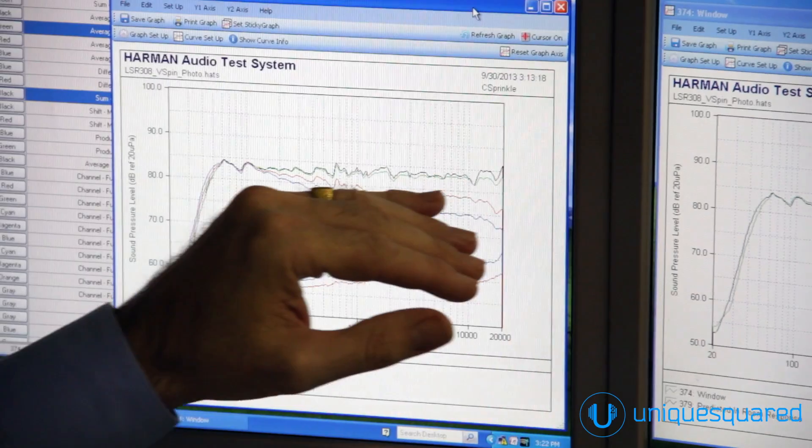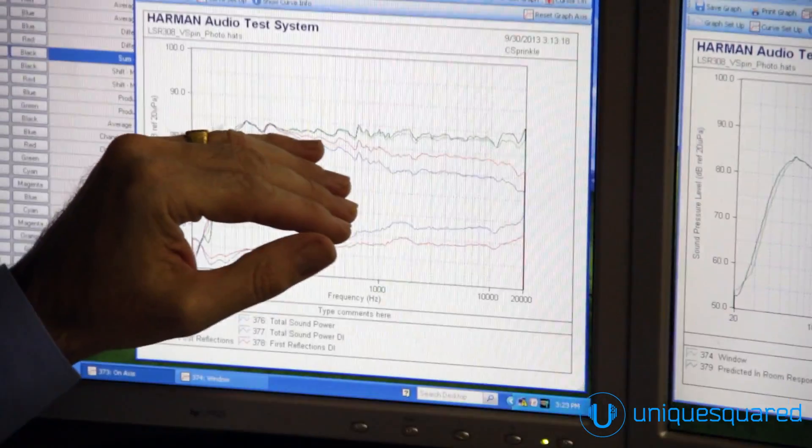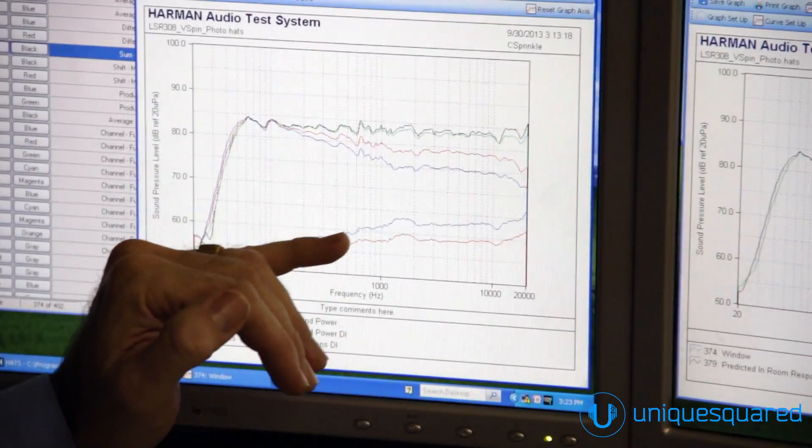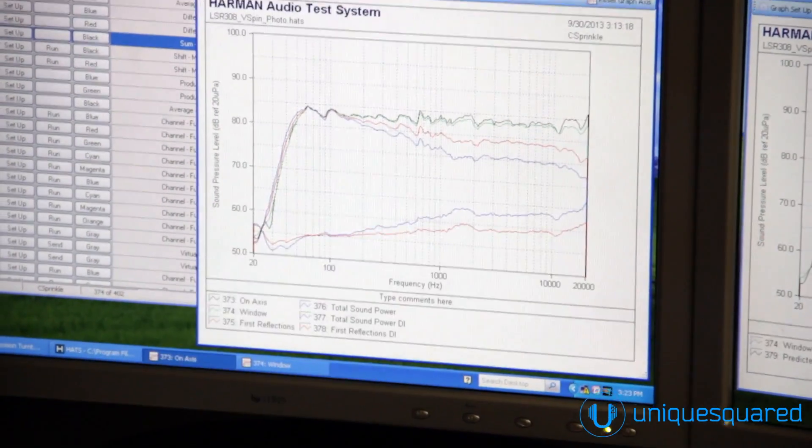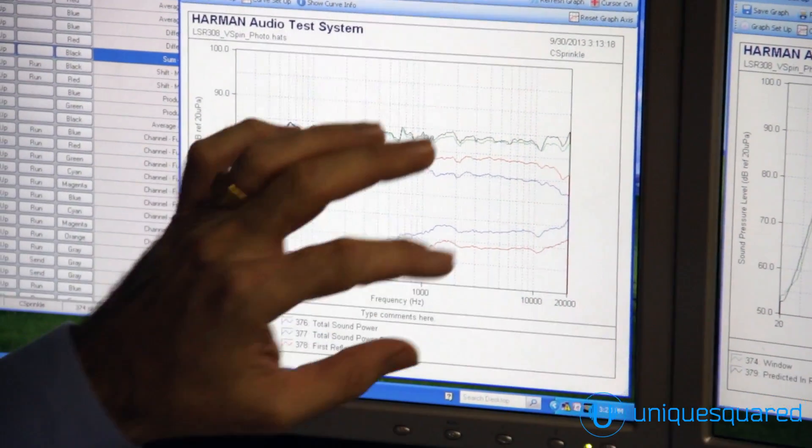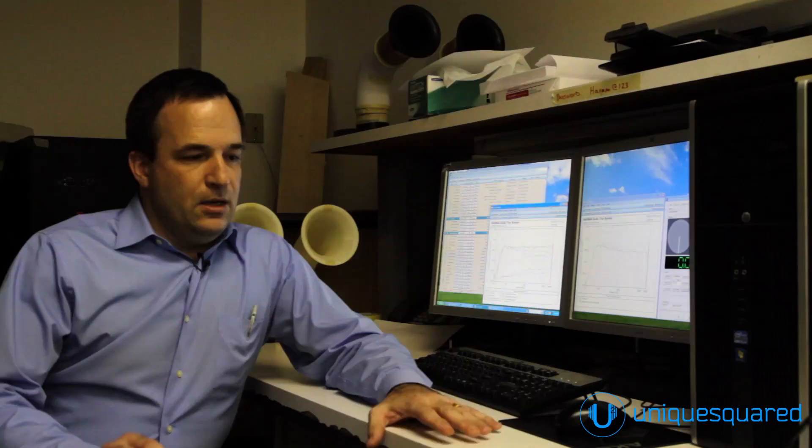You'll notice that the green curve, that the actual general shape of these curves are very similar. And you'll also notice that these directivity index curves are also very smooth. This is something that is fairly unique to JBL loudspeakers. You can have a loudspeaker that has very flat frequency response. You're only going to get that frequency response flat in one space.